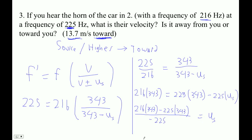All right, here we go. Left parenthesis, 216 times 343 minus 225 times 343, right parenthesis, divided by negative 225.